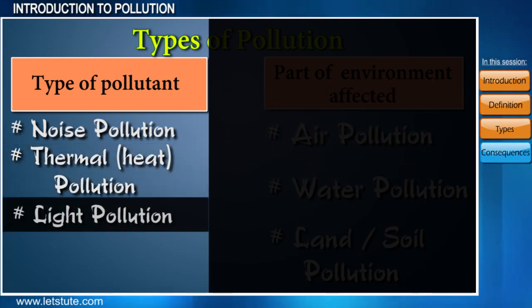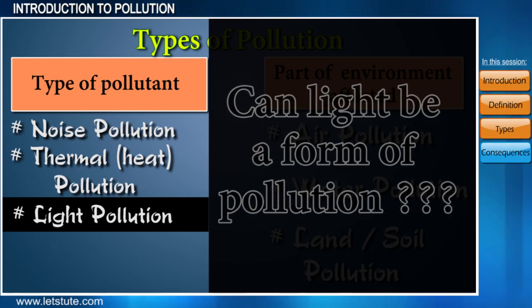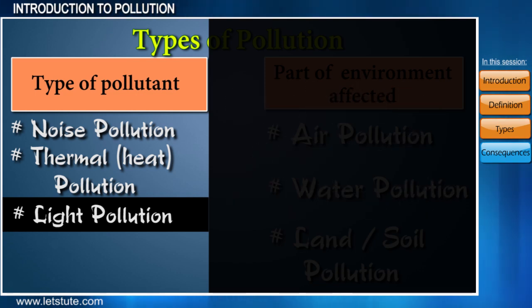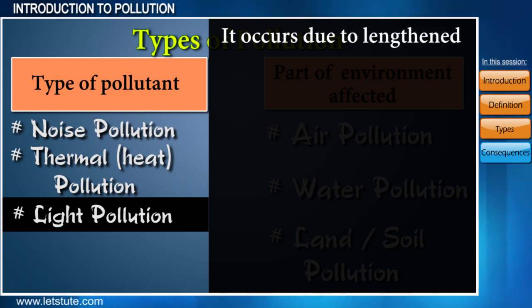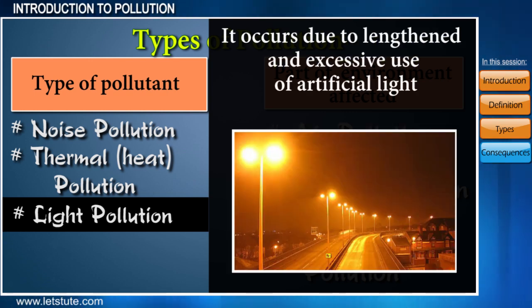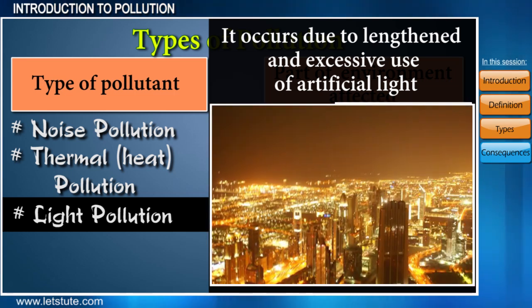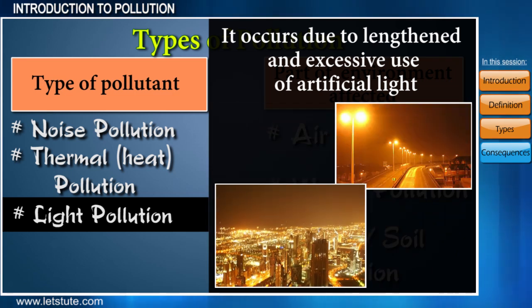Light pollution — you might be wondering how light can be a form of pollution. Light pollution occurs due to the excessive and widespread use of artificial light, such that it results in the brightening of the skies at night.